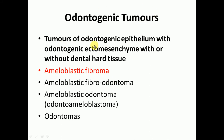We will cover tumors of odontogenic epithelium with odontogenic ectomesenchyme, with or without dental hard tissues — these are mixed tumors. In our previous lectures we studied tumors with only epithelium without ectomesenchyme, which included ameloblastoma, calcifying epithelial odontogenic tumors, adenomatoid odontogenic tumors, and squamous odontogenic tumors.